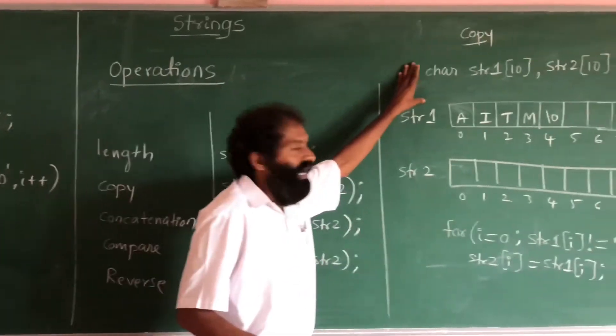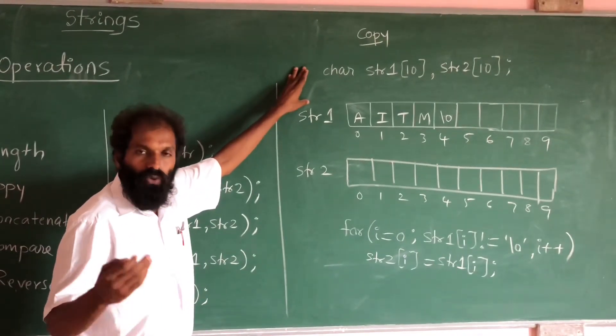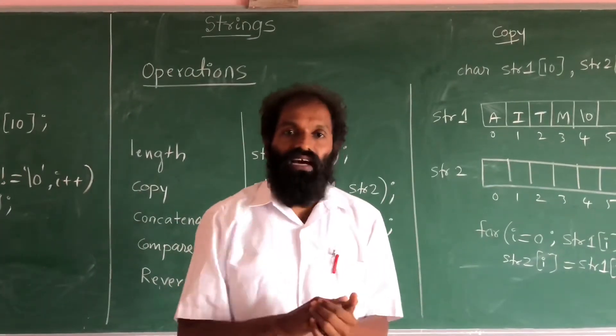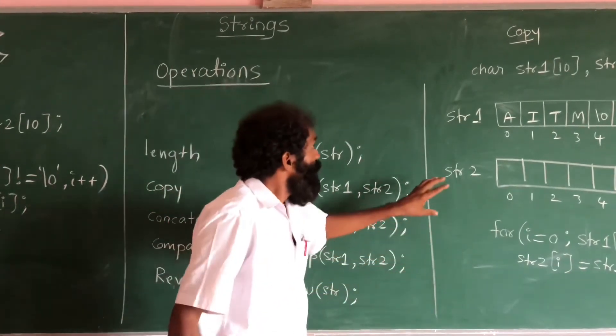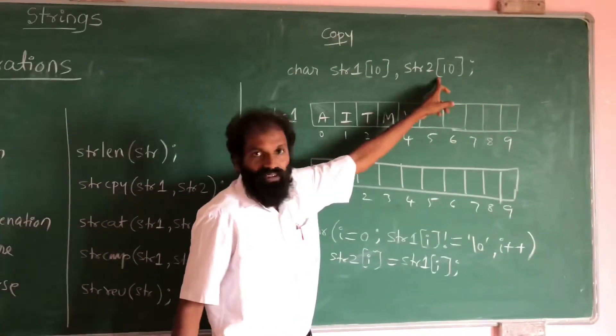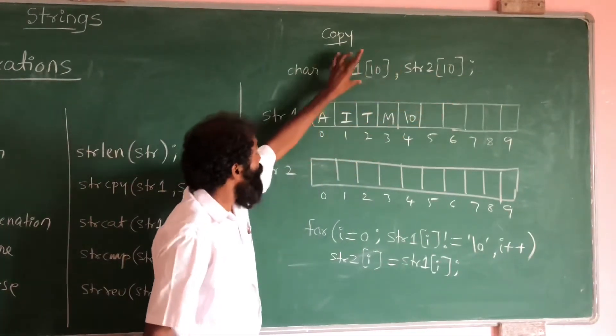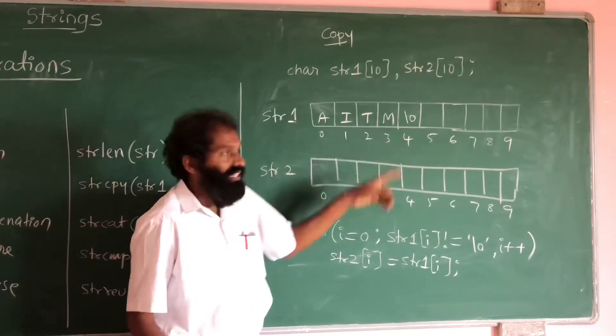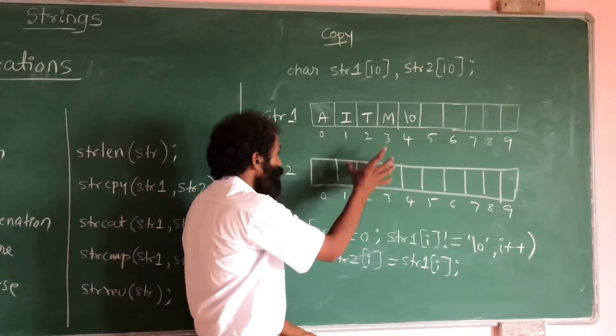Now I will explain how to copy a string into another array. Here we have two arrays. In this array we have stored AITM. This AITM we need to copy in this array.